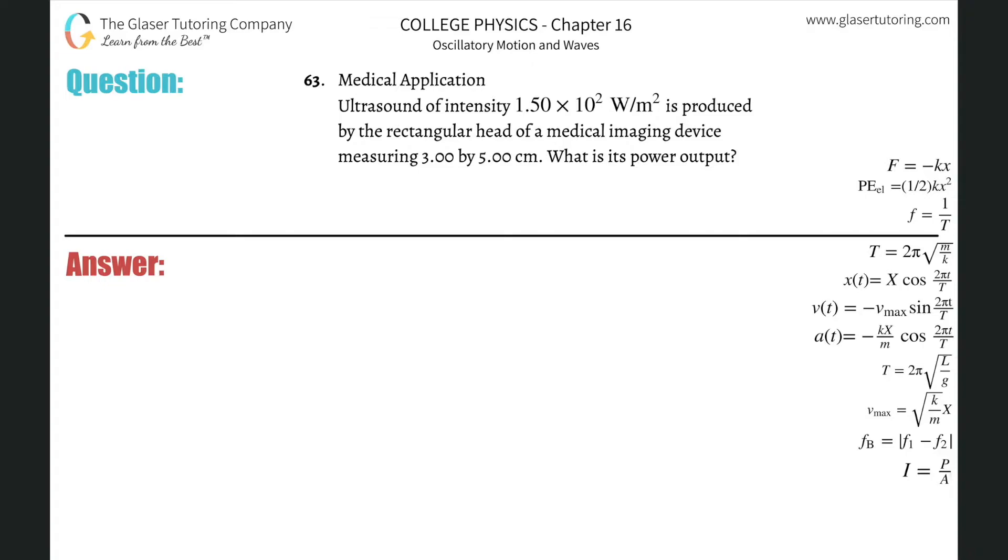Number 63, medical application. Ultrasound of intensity 1.5 × 10² watts per meter squared is produced by the rectangular head of a medical imaging device measuring 3 by 5 centimeters. What is its power output?